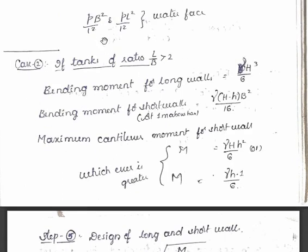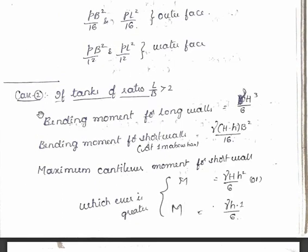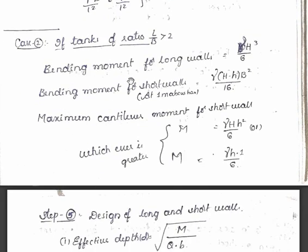That is for case 1. This entire process is for case 1, which is L/B less than 2. Then this is case 2: if tank's ratio L/B is greater than 2, then what happens? So we have to find out the maximum bending moment for long walls as this formula: gamma into H³/6. We know that gamma is the unit weight of water.